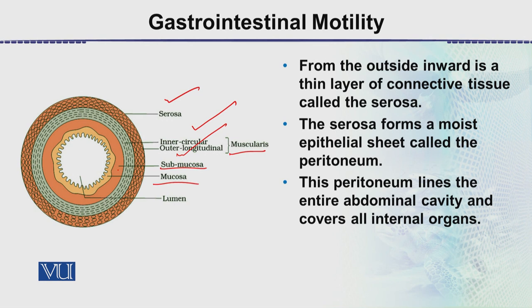The mucosa faces the inner cavity. It is just like a pipe — the intestine is like a pipe — and the wall of that pipe has multiple layers. Now from the outside inward, the outermost is a thin layer of connective tissue called the serosa. The serosa forms a moist epithelial sheet called the peritoneum.